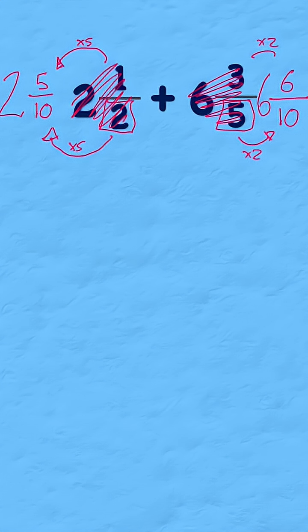Now when I add them up, I can start by adding up the whole number. I have a six and a two. Six and two leaves me with eight.